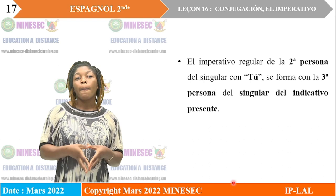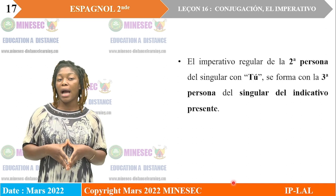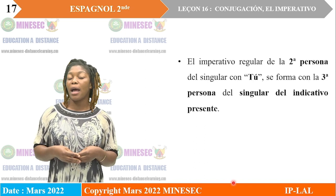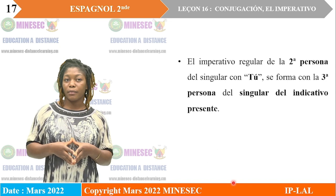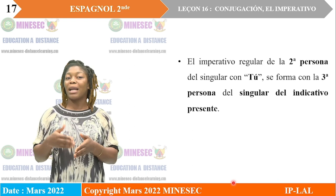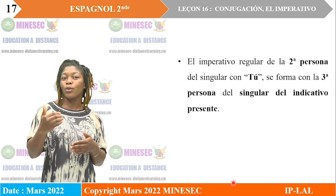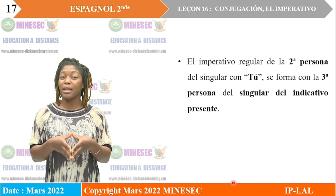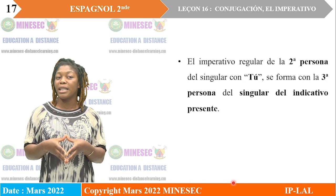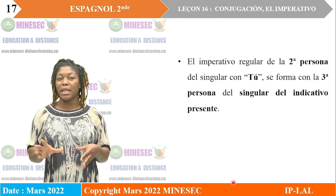El imperativo regular de la segunda persona del singular con tú se forma con la tercera persona del singular del indicativo presente. Para formar el imperativo afirmativo de tú, hay que servirse del presente del indicativo, de la tercera persona del singular, que es él o ella, usted, de su terminación.